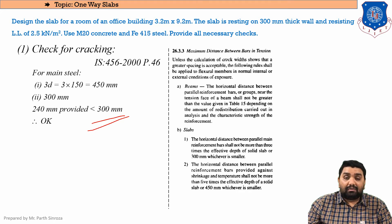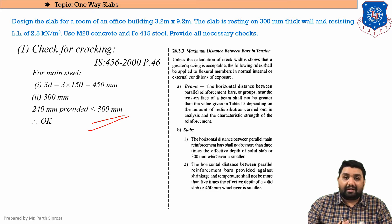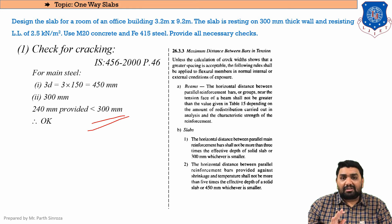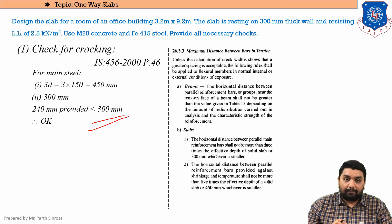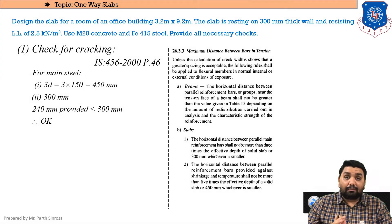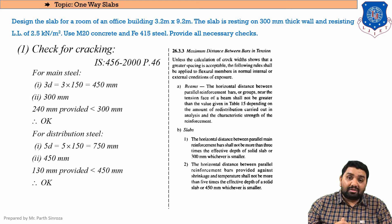Keep in mind: while solving a slab, if the spacing comes out to be greater than 300 mm, you always need to provide spacing maximum of 300 mm, otherwise it will fail this check. In this case we have provided 240 mm, which is less than 300 mm, therefore it is okay. The check for main steel is completed.